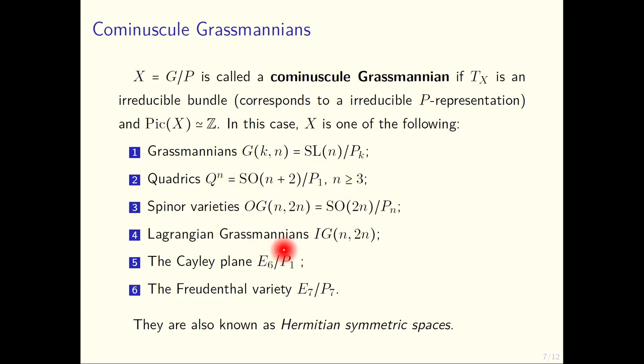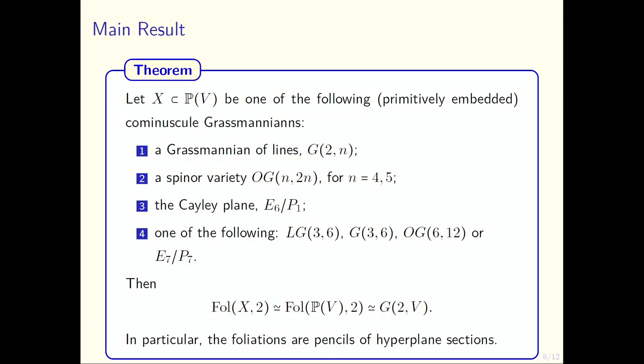These are classified into six types: classical Grassmannians G(k,n) = SL(n)/P_k, quadrics Qⁿ = SO(n+2)/P_n with n≥3, Spinor varieties OG(n,2n) = SO(2n)/P_n, Lagrangian Grassmannians LG(n,2n), the Cayley plane E₆/P₁, and the Freudenthal variety E₇/P₇. These are also known as Hermitian symmetric spaces.